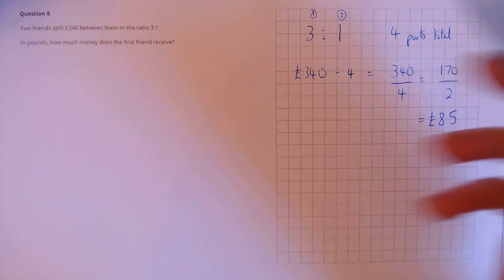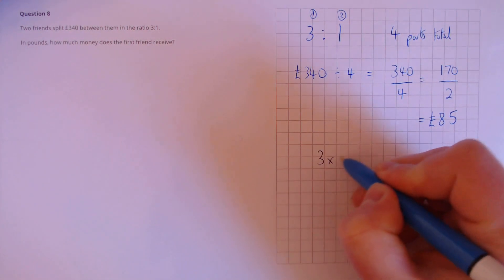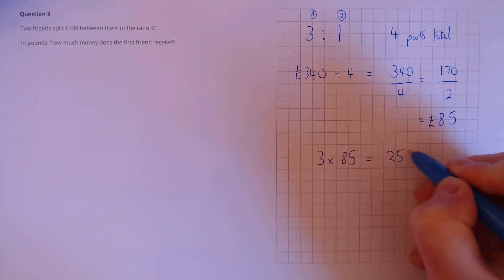So one share is worth £85. The first friend gets three shares, so that's three lots of £85, which is £255.